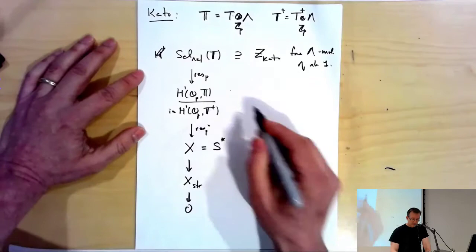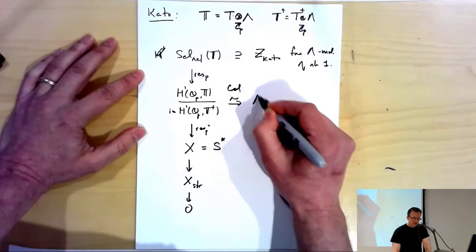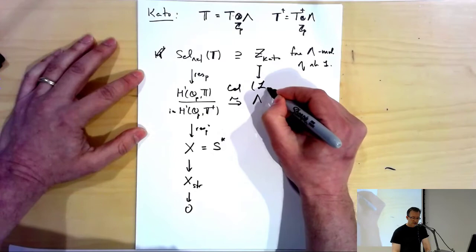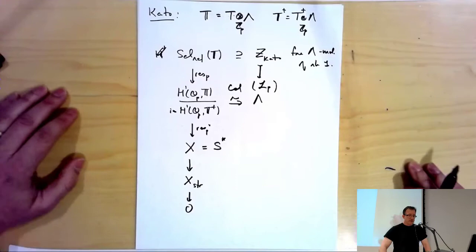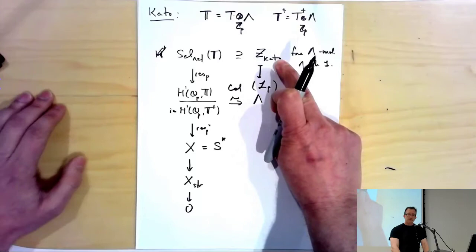There's a Coleman map here to Lambda, and the image inside here under the Coleman map is the p-adic L-function — that's Kato's explicit reciprocity law. So knowing that this is a base layer of an Euler system, the Euler system machinery takes over and tells us the result.